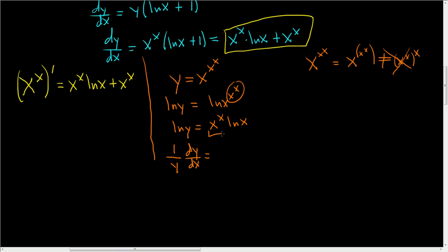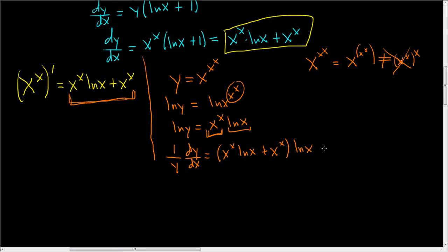Here we use the product rule, so it's the derivative of the first times the second. The derivative of x to the x is the creature we computed: x to the x times ln x, plus x to the x. That's why we did it at the beginning of the problem. Times the second, plus the first — so x to the x times the derivative of the natural log of x, which is 1 over x.